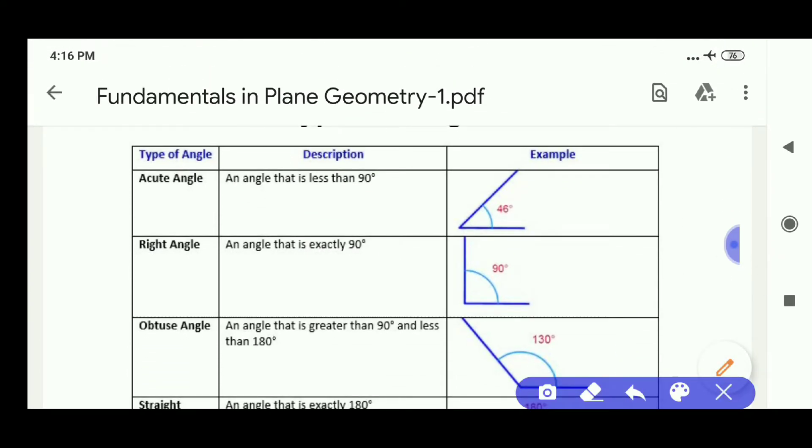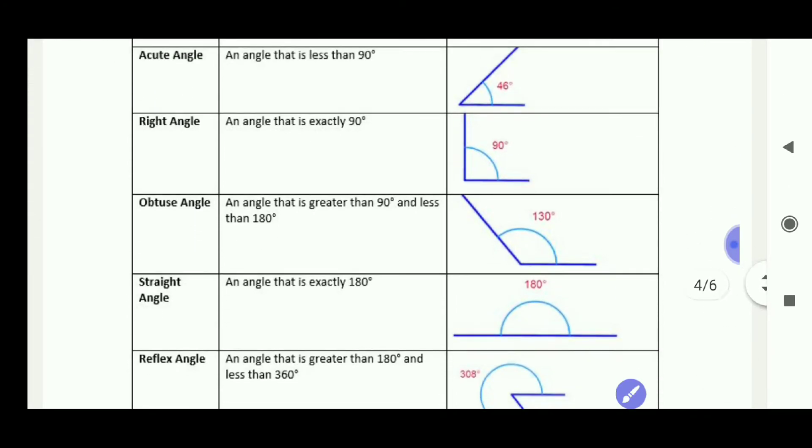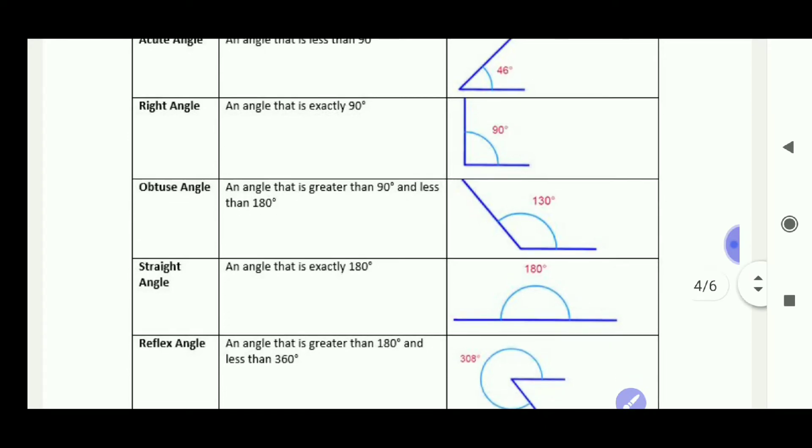Acute angle. Angle between 0 and 90 degrees. Right angle. 90 degrees angle is called right angle. Obtuse angle. Angle between 90 and 180. Straight angle. Exactly 180 degrees. Angle 180 degrees is called straight angle.